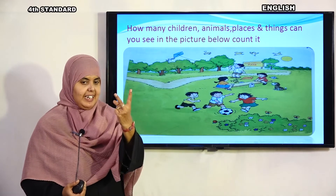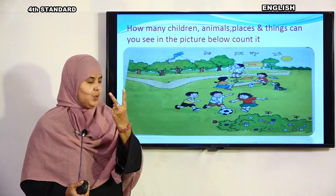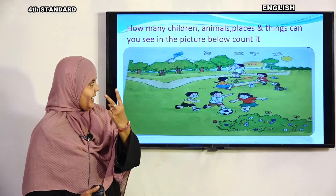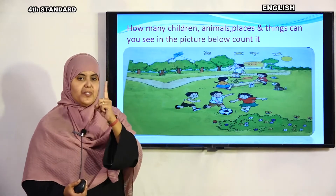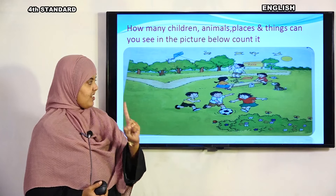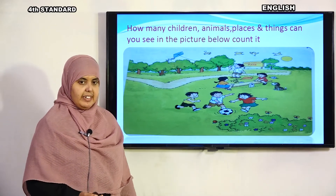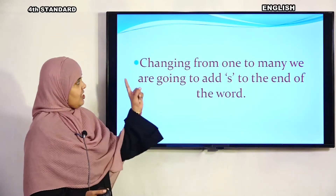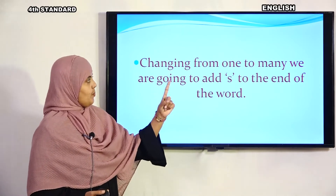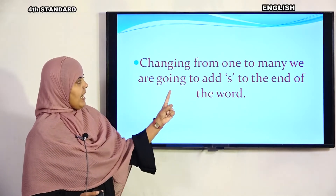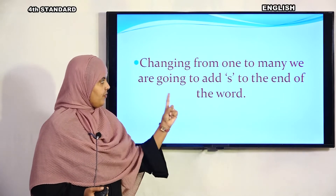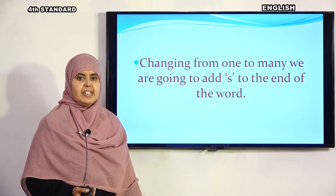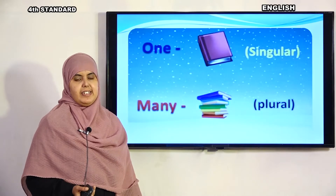Two kites — is it two kites or three kites? Only two kites. Dog: one. Okay children. Now in the next section, we are going to learn about changing from one to many. We will add 's' to the end of a word.